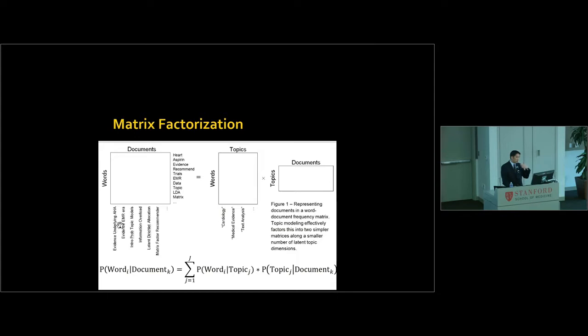So one way to approach this, if you think of this as a big, as a body of documents, a big word matrix. So here in this matrix, every column represents some article I've cited. Every row is some word, and the matrix tells you how often does each word appear in each document. And basically what the algorithm is doing is it's doing a matrix factorization problem. It factors this into two simpler matrix along a smaller number of latent topic dimensions.